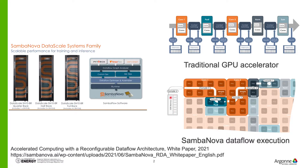In SambaNova's approach, data from memory enters into the so-called Pattern Memory Unit (PMU) and Pattern Compute Unit (PCU). The convolution and pooling operations are mapped and optimized on these PMUs and PCUs, so data flows directly from convolution to pooling without going back into main memory.